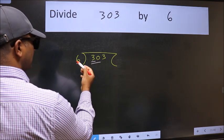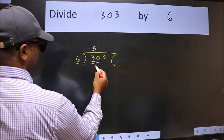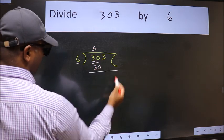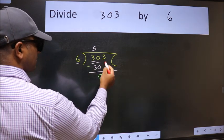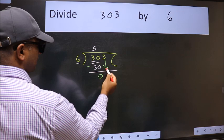When do we get 30 in 6 table? 6 times 5 is 30. Now we should subtract. We get 0. After this, bring down the next number 3.